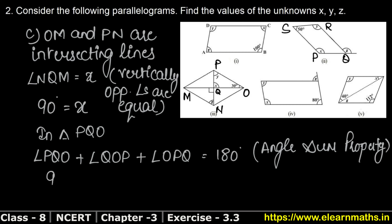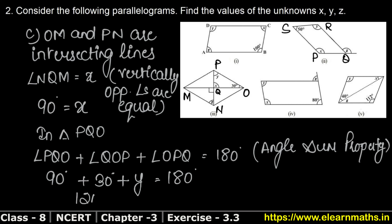In triangle PQO: the Q angle is 90 degrees (which is x), the O angle is 30 degrees, and the P angle is y. So: 90 plus 30 plus y equals 180 degrees. That gives 120 plus y equals 180 degrees. Therefore y equals 180 minus 120, so y equals 60 degrees.